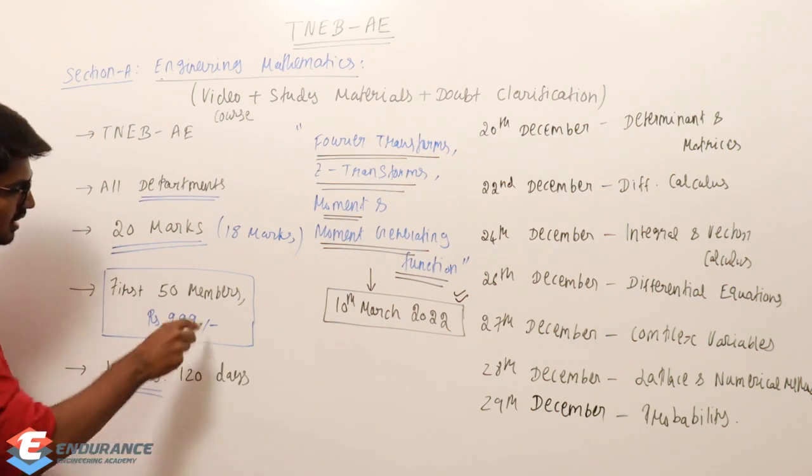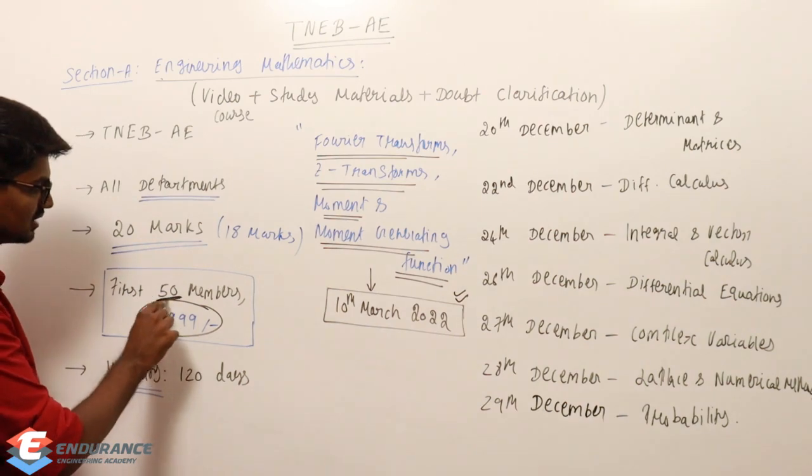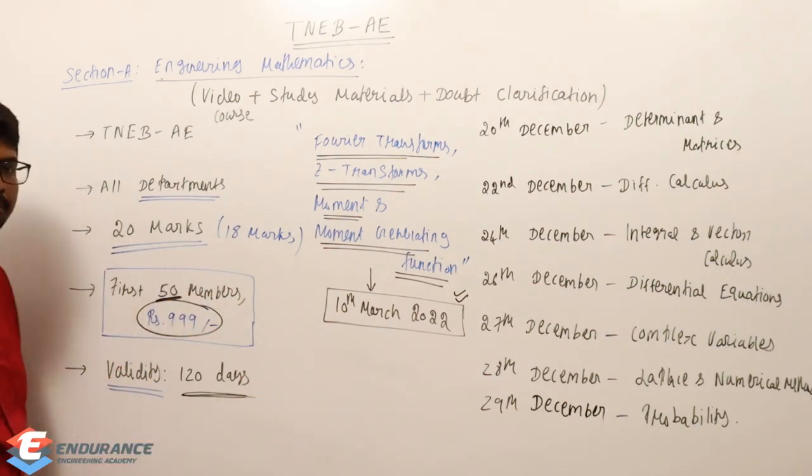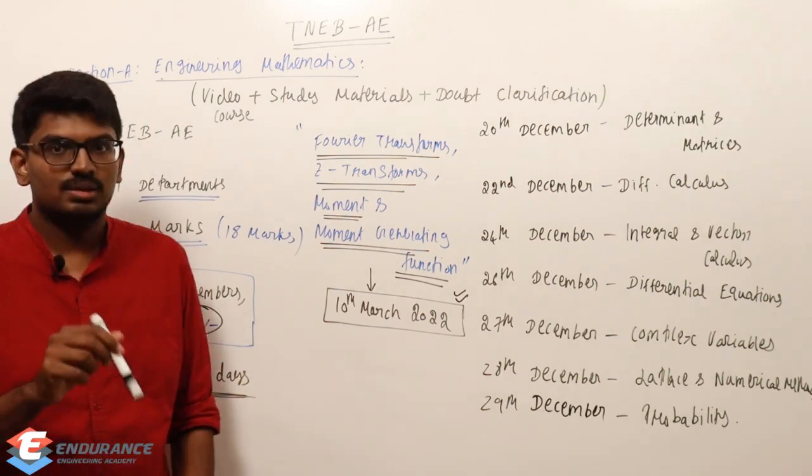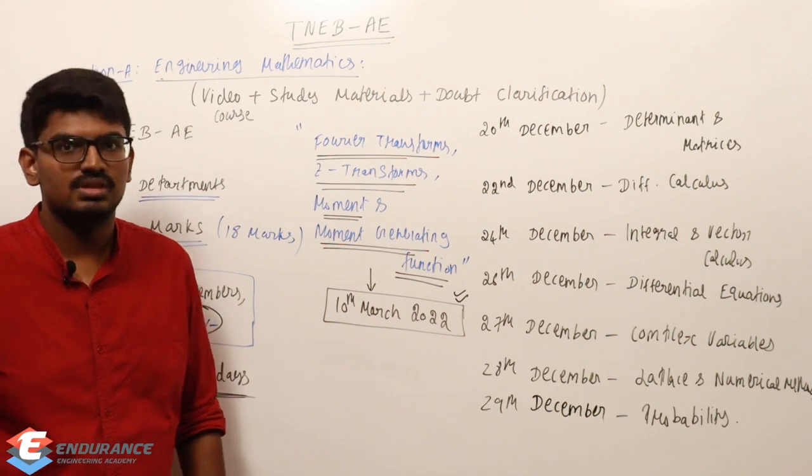Now, coming to next. First 50 members, course fee is 999. That is, 1000 rupees. It is only for the first 50 members. And, validity 120 days. As I said already. So, you register on the date. In the 120 days. The same validities for mechanical course. And, the same thing will happen for BES also.